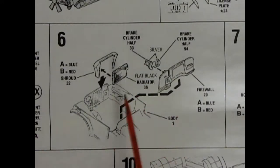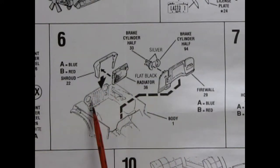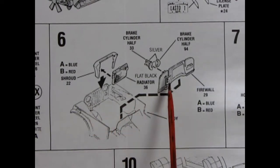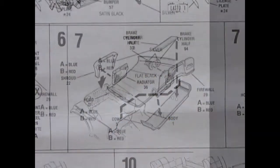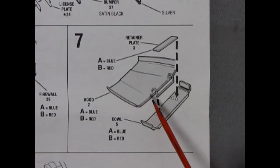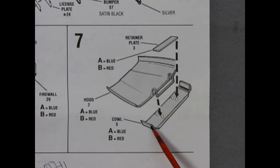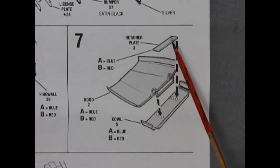Panel 6 shows our radiator and radiator shroud being glued into the front of the body as well as the firewall and our brake cylinder. Our Jeep includes an opening hood that has a hinge on it and this is all held into place on the underside of the cowl with this nice retainer plate.